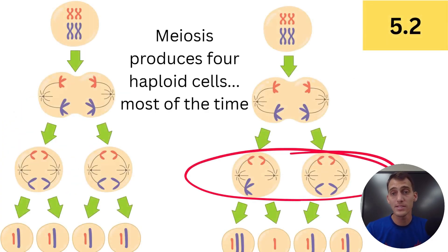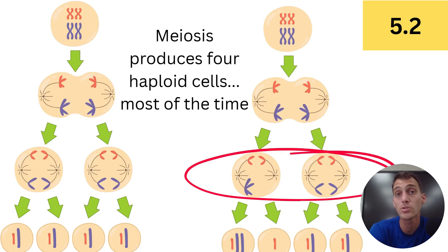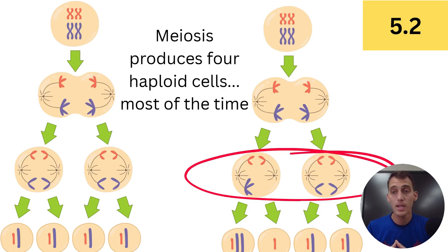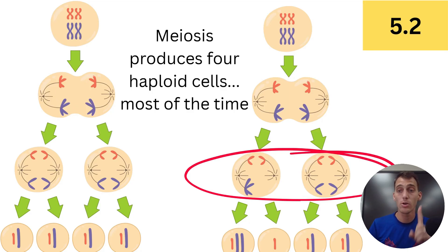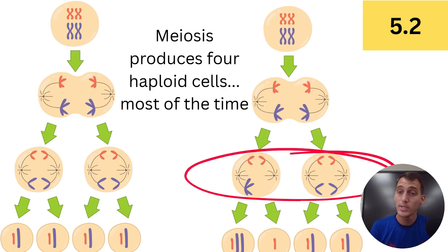Everybody's different from each other, and that's the reason why. We've already talked about how meiosis produces four non-identical gametes — future sperm cells or egg cells that will fuse with another gamete and become new offspring with a new combination of genes. Meiosis produces haploid cells, which means they only have one set of chromosomes. One set plus one set equals two sets of chromosomes. But it's not always necessarily true that meiosis produces haploid cells — sometimes there are mistakes and errors in cell division.